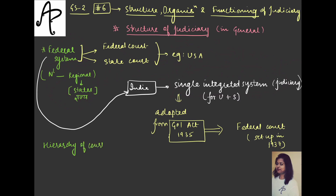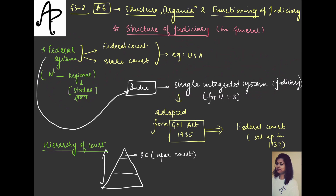Now, what does 'single integrated' mean? Integrated means something which is related to each other — which flows in a sequence where one part is related to the next. So the hierarchy of courts we have is: at the top, you have the Supreme Court, which is also called the apex court — meaning the topmost court. This is the highest decision-making authority for the land, and it will have jurisdiction over the courts below it. Below it in this integrated system, you have the High Courts.